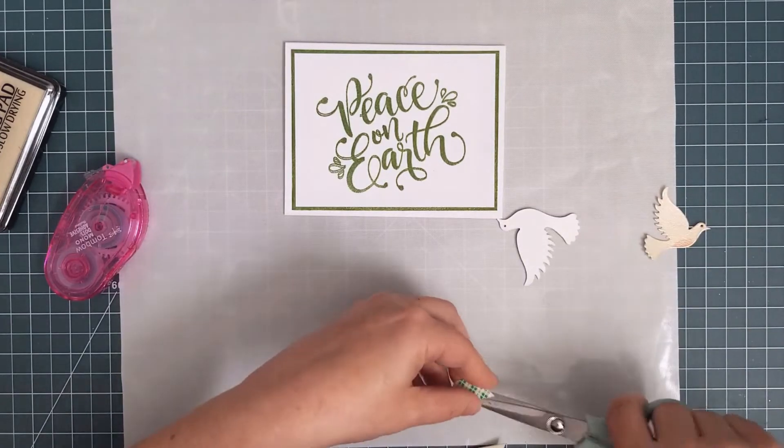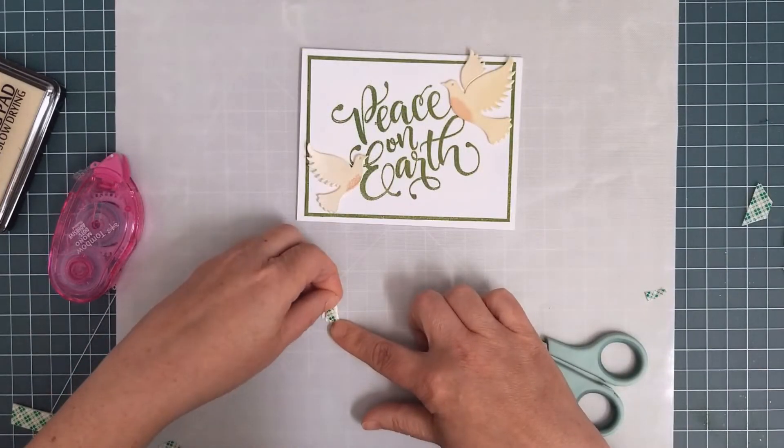I popped the doves up with little pieces of foam tape and then adhered the branch with a quickie glue pen.